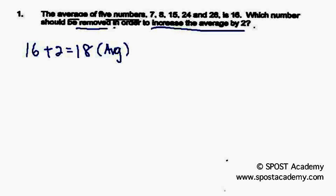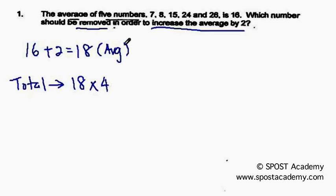Since we know the new average is 18 and we will only have 4 numbers in total, to find the new total of the 4 numbers, we simply need to use 18 times 4. That will give us 72.